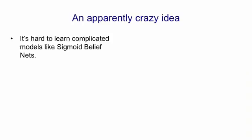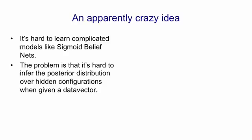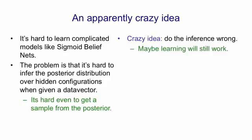To summarize, it's hard to learn complicated models like sigmoid belief nets because it's hard to get samples from the true posterior distribution over hidden configurations when given a data vector. And it's hard even to get a sample from that posterior. That is, it's hard to get an unbiased sample. So the crazy idea is that we're going to use samples from some other distribution and hope that the learning will still work. And as we'll see, that turns out to be true for sigmoid belief nets.